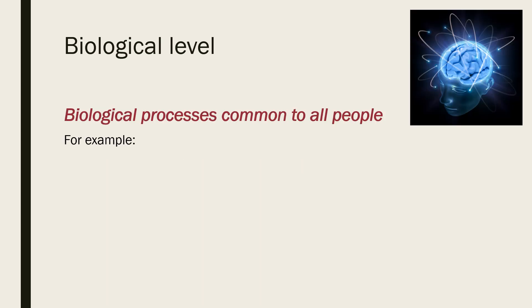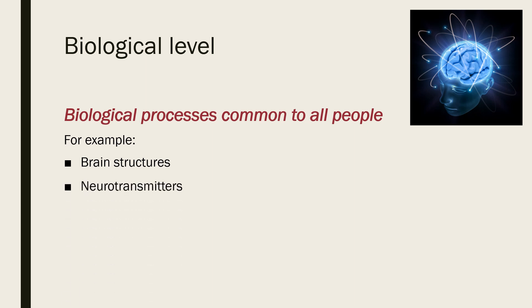The first level is the biological level — biological and chemical processes underlying behaviour which are common to all people. For example, brain activity and brain structures. These may be influenced by substances consumed such as alcohol or caffeine, as well as our level of arousal or alertness which can be impacted by sleep. Neurotransmitters including adrenaline, which is part of the fight or flight response, and others such as serotonin and dopamine which influence our mood, or GABA and acetylcholine which influence how aroused we are.